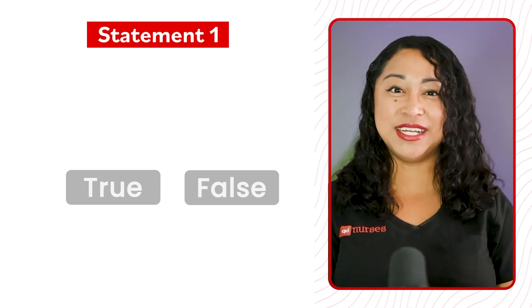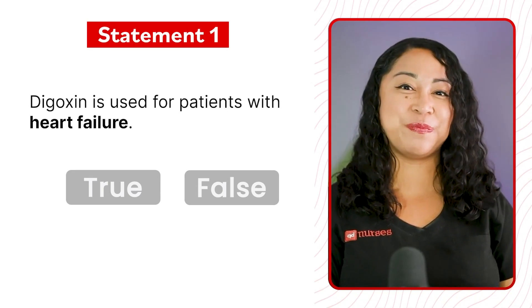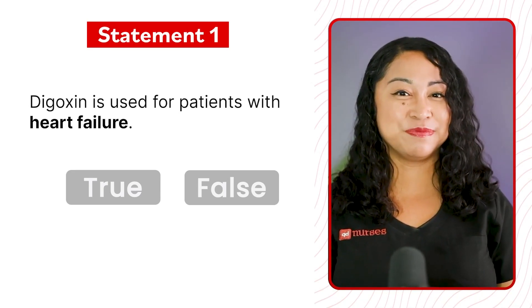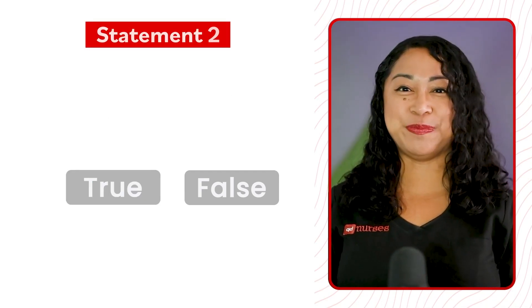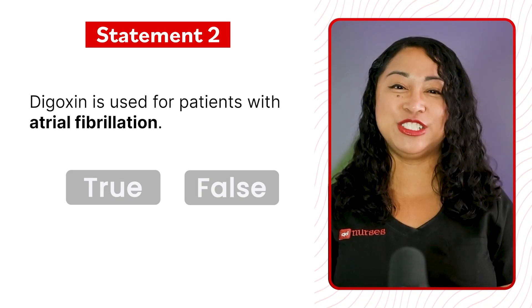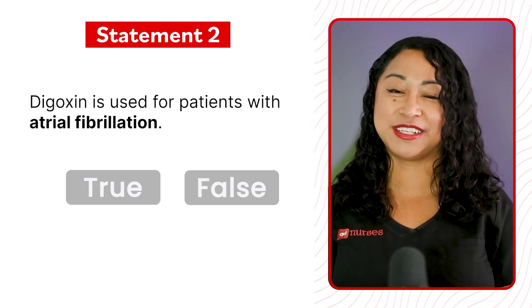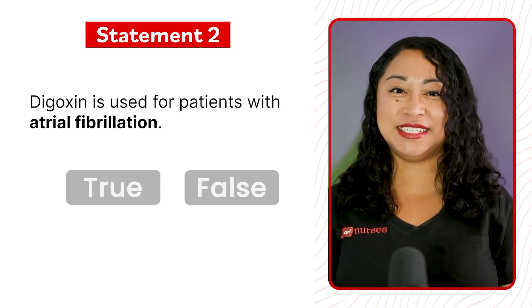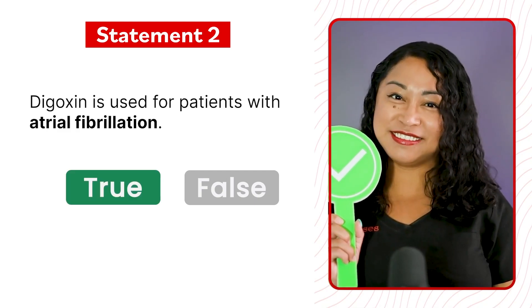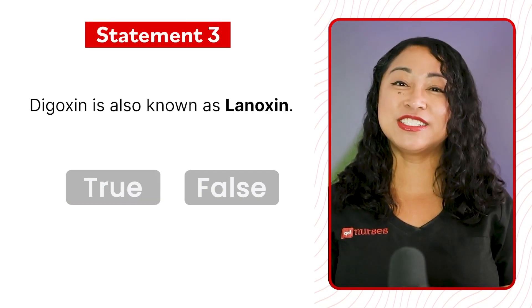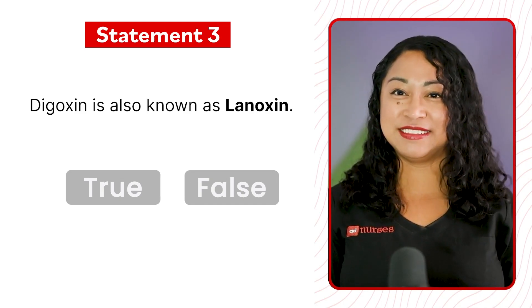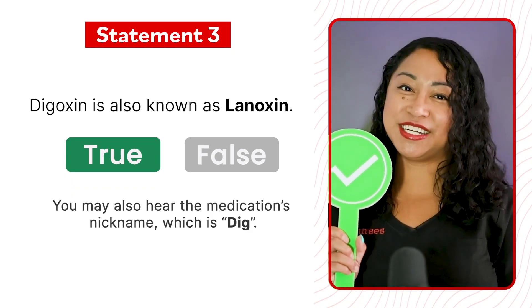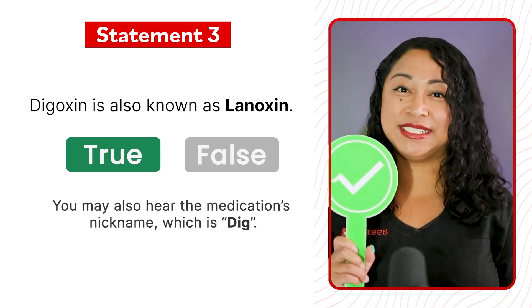Let's go over 6 true or false statements. Statement 1: Digoxin is used for patients with heart failure — true. Statement 2: Digoxin is used for patients with atrial fibrillation — true. Statement 3: Digoxin is also known as Lanoxin — true. You may also hear the medication's nickname, which is DIG.